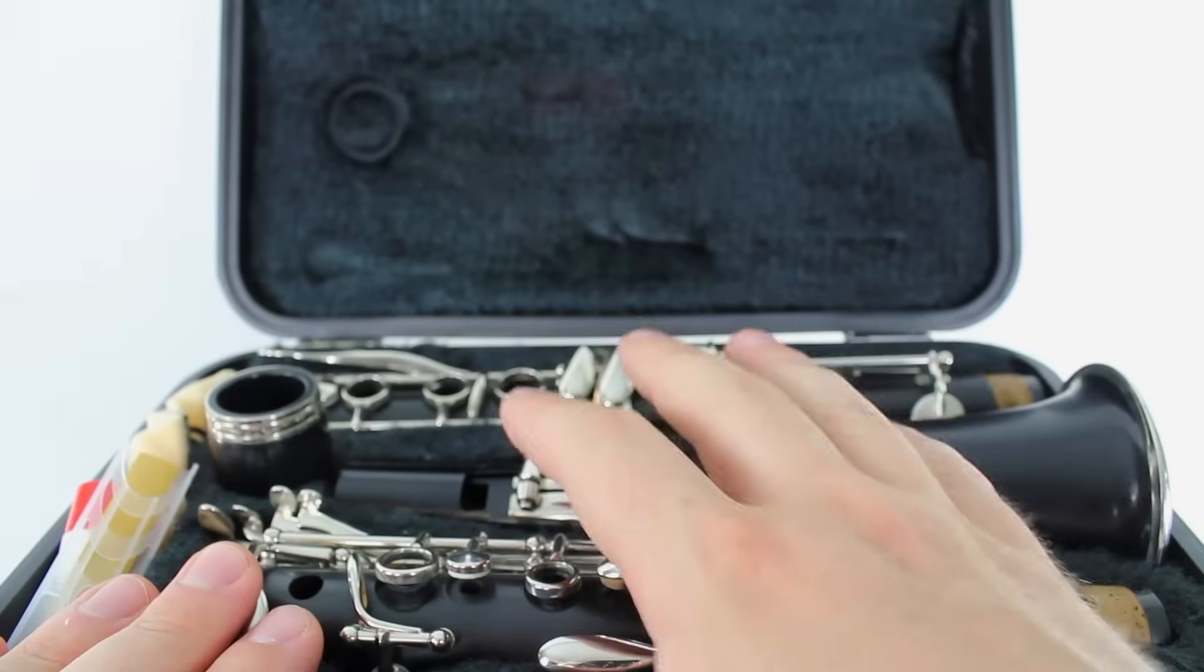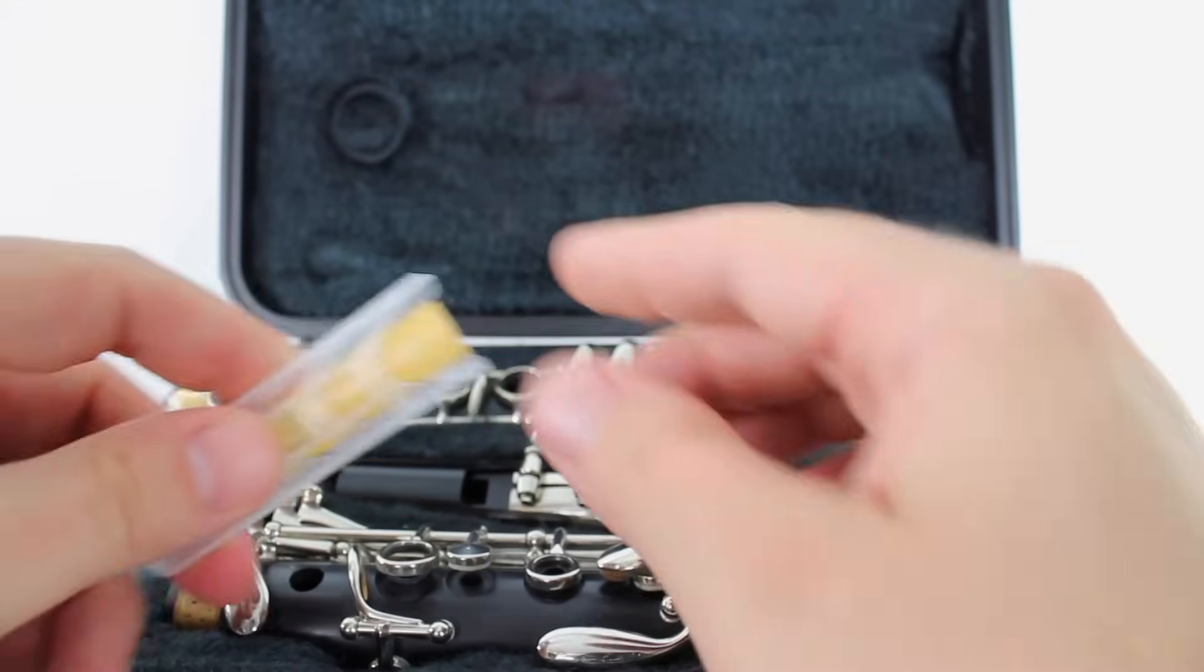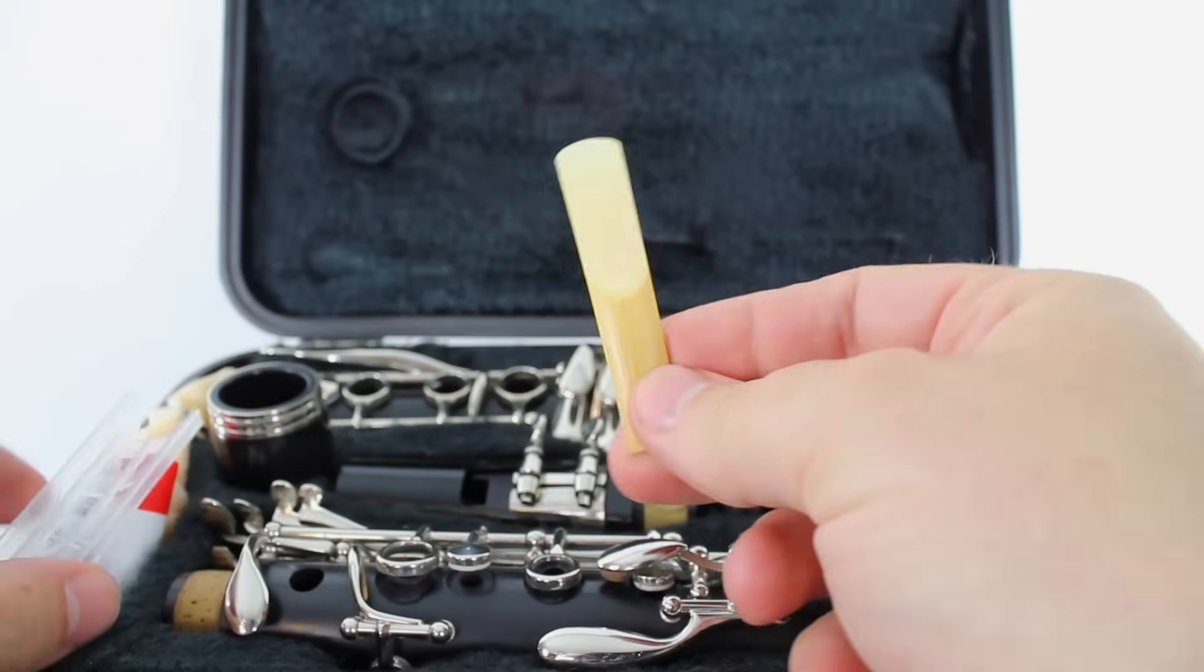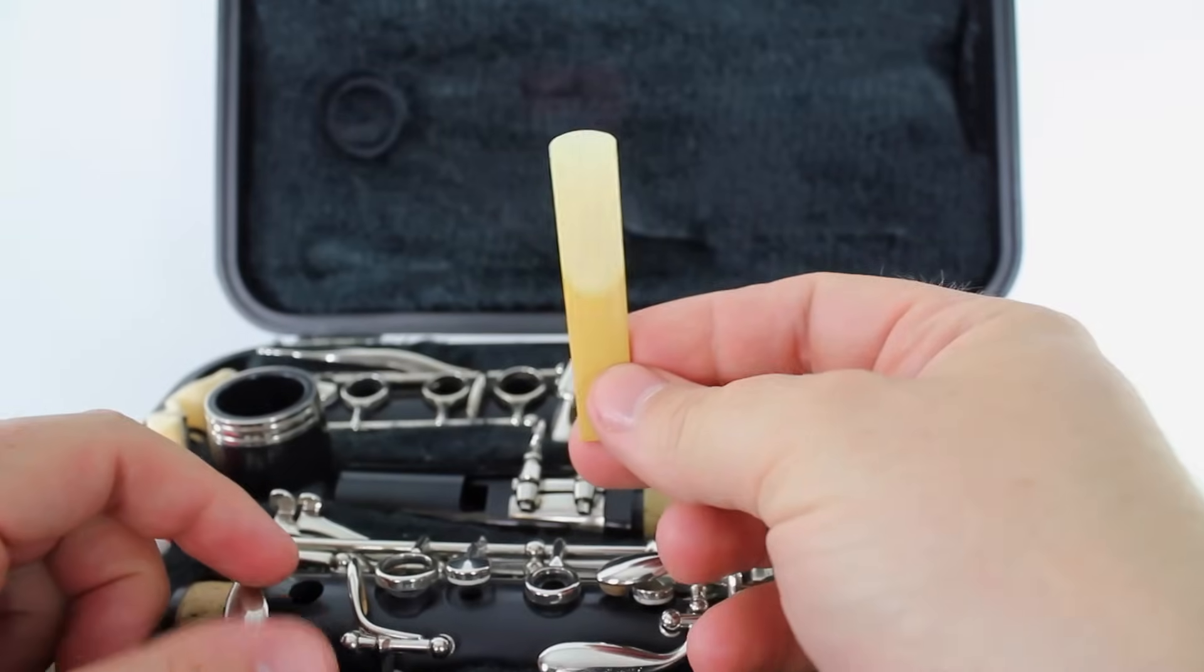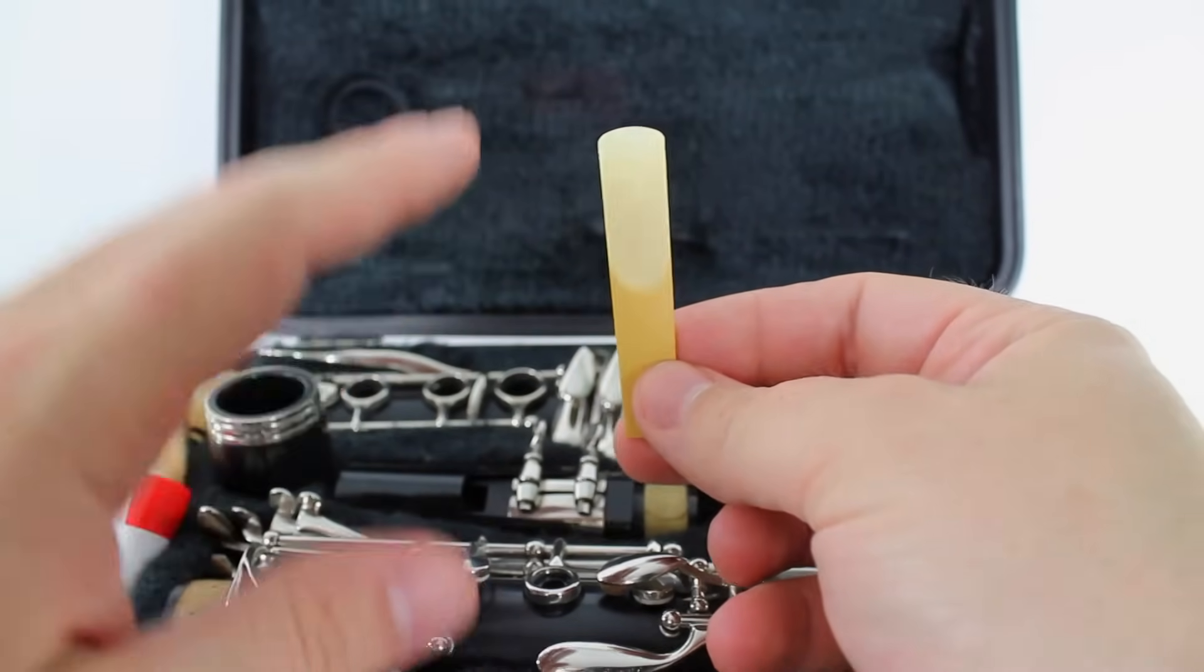We're going to be putting together our mouthpiece, the barrel, and the reed. So the first thing we're going to do is pick up the reed, which is in one of these reed cases. And there are some important things that you need to know about reeds. So we're going to take a quick minute and talk about reeds.